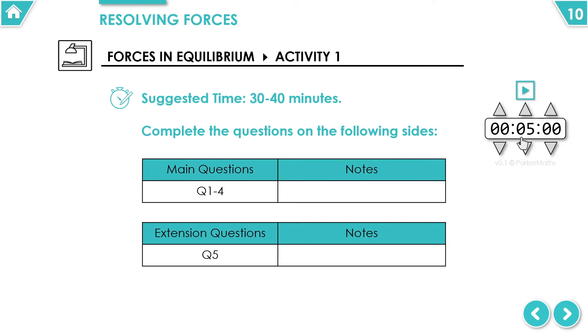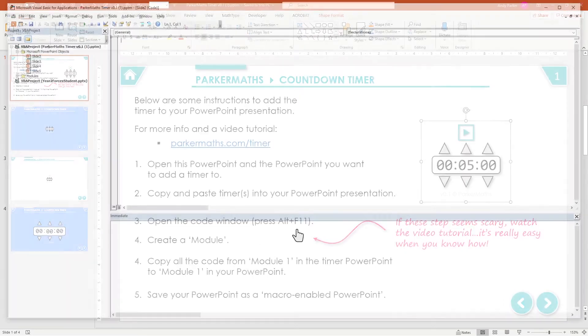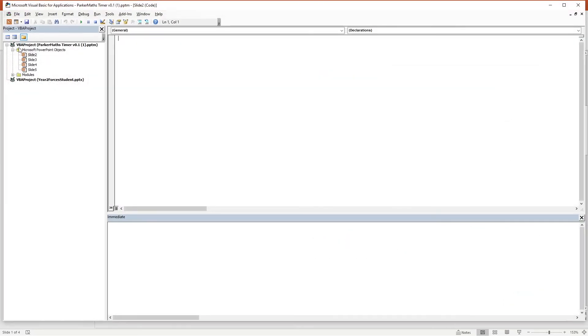Don't worry if you've not got any coding experience, you don't need to have any. What I'm going to do next is open the code window in PowerPoint by pressing Alt and F11. You can see the two PowerPoints open here. I've got the timer and I've got a new PowerPoint I want to put the timer into.